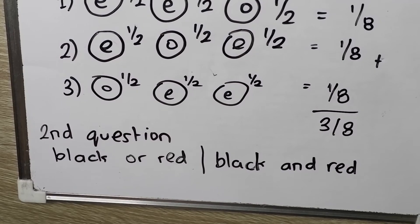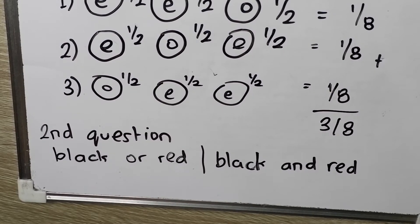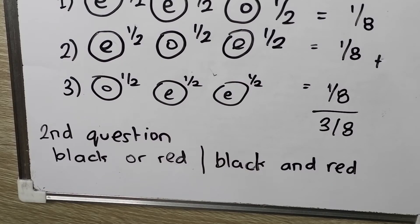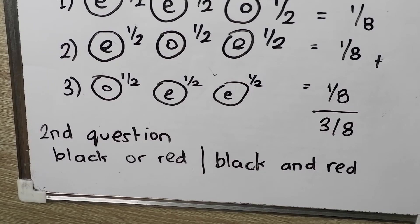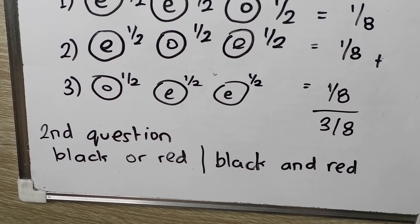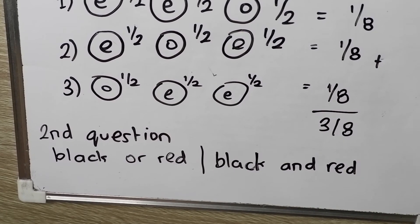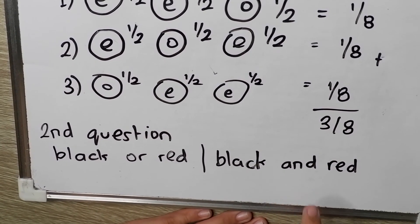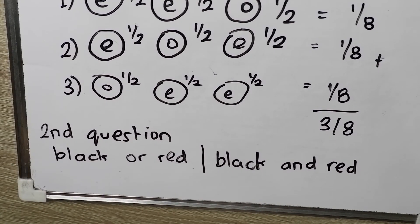What about the second question? The second question says: in a deck of cards, what's the probability of drawing a card that's black or red? What about black and red? Black or red is certain because there are only 2 colors in a deck of cards — black and red. So you will always get a black or red card. Black and red is impossible because there is no card that is both black and red.